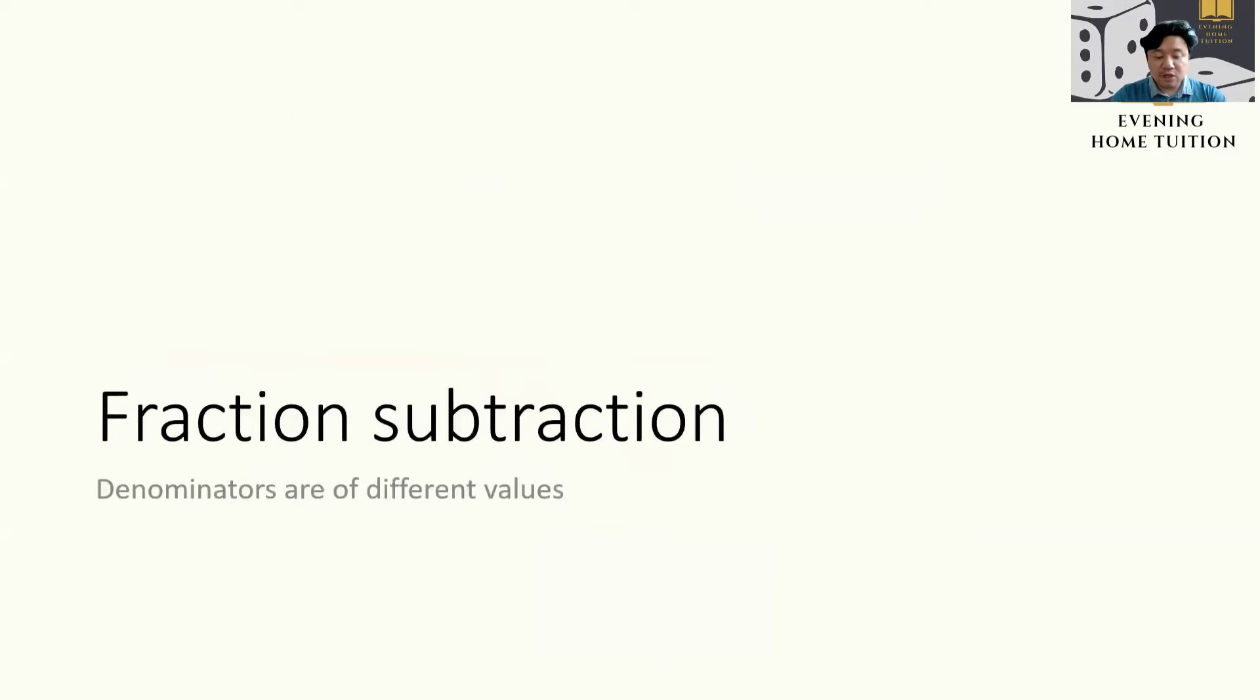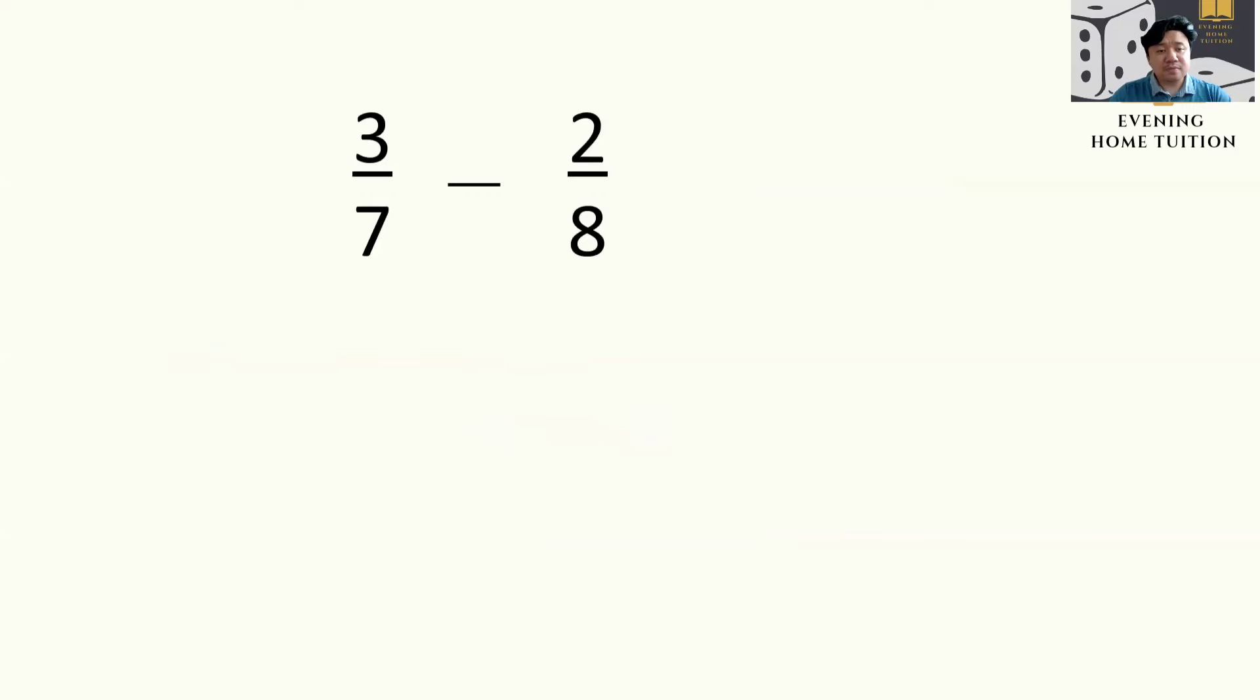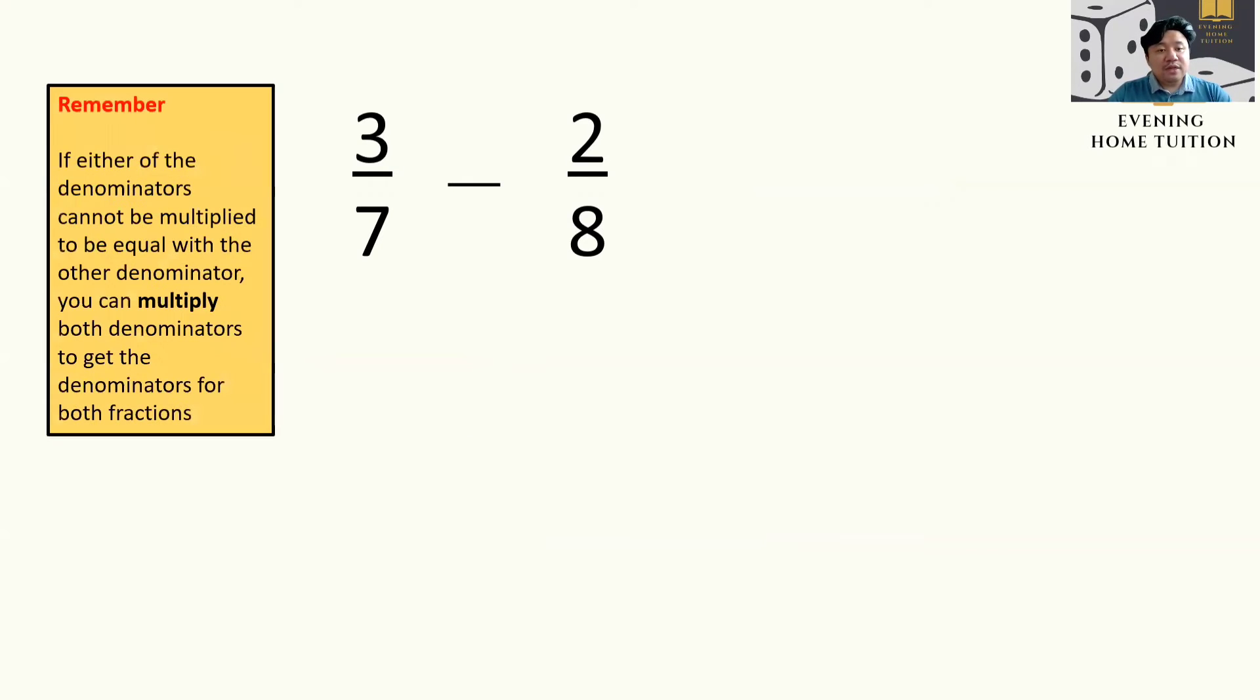Now what happens if the denominators are of different values? Because a lot of you couldn't answer the next question. So 3 over 7 minus 2 over 8. If either of the denominators cannot be multiplied because there is no bigger denominator than the next, you can always multiply both denominators.